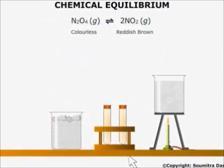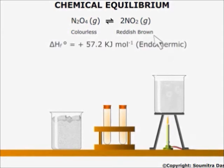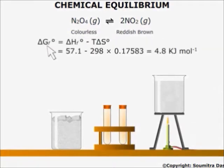Now consider this reaction. Dinitrogen tetroxide is colorless, whereas nitrogen dioxide is of brown color. This reaction is endothermic and this is the entropy change for the reaction. Now ΔG for this reaction is 4.8 kJ per mole. This is almost equal to zero. Therefore, the reaction reaches equilibrium at about room temperature.